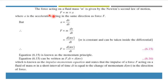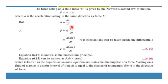As we know from Newton's second law of motion, F equals MA, where F is the force acting on a fluid, M is the mass, and A is the acceleration acting in the same direction as force F. Since acceleration is the rate of change of velocity, Newton's second law can be written as F equals M·dV/dt, or equivalently d(MV)/dt. This equation is known as the momentum principle and can also be written as F·dt = d(MV).